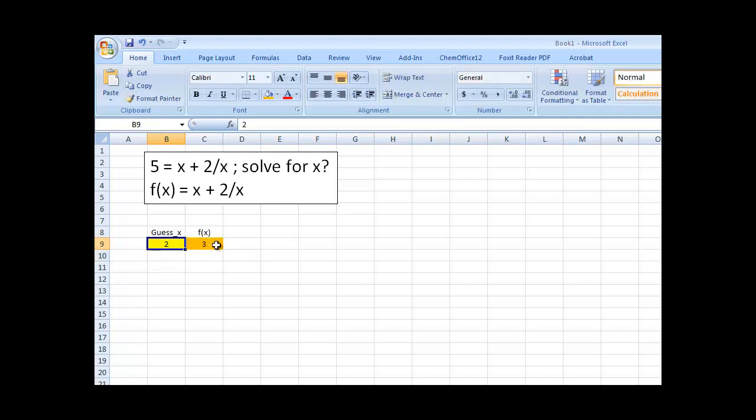So, I can just sit here and change this all day long. I can go 1, 2. 1 and 2 give the same value. 3, 4. We're getting closer. 7. So, I can just sit here all day long and keep changing these back and forth until f of x equals 5. And then I know I have the right x value. Or, I can use goal seek.